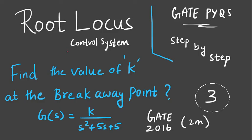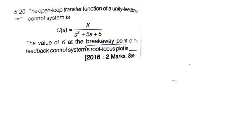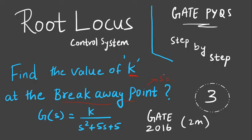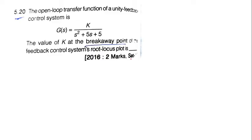So now we are in the third problem. Here we are supposed to find the value of k at the breakaway point. We are supposed to find the value of k at the breakaway point, not just the breakaway point. The breakaway point would be s equal to something we'll get, and the value of k is what we're supposed to find here. At this s, what is the value of k? Let me show you the question for this.